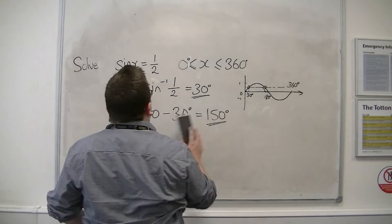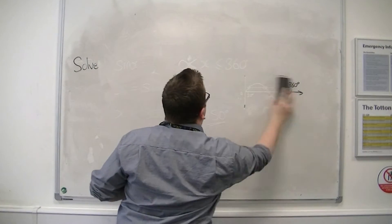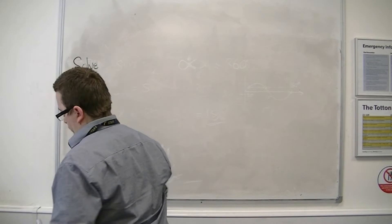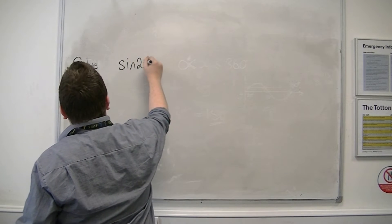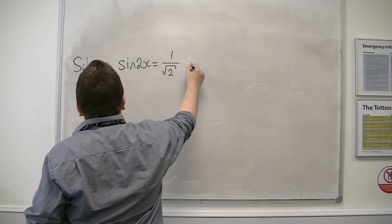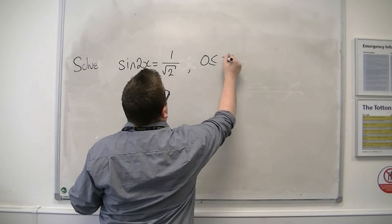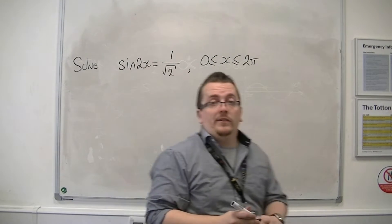Let's look at another one. Let's keep with sin. So let's say we want to solve sin of 2x is equal to 1 over root 2. And this time we're going to solve it between 0 and 2 pi. So this time we're going to be working in radians.